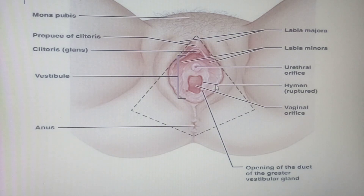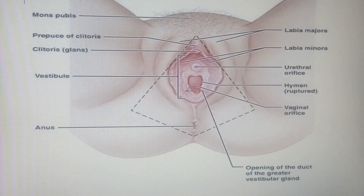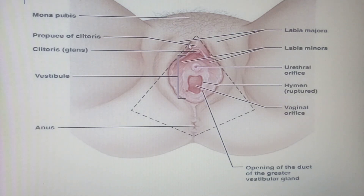Around this area we call it the vestibule of the vulva. The vestibule of the vulva is roughly triangular in shape.